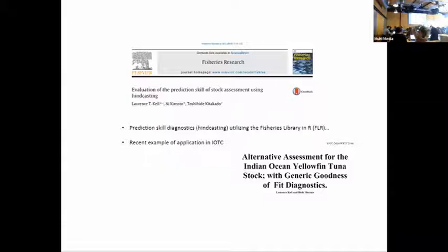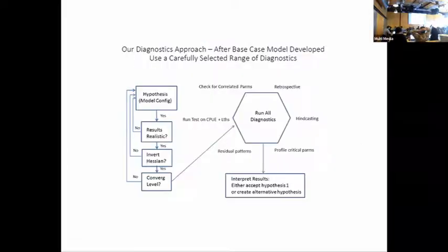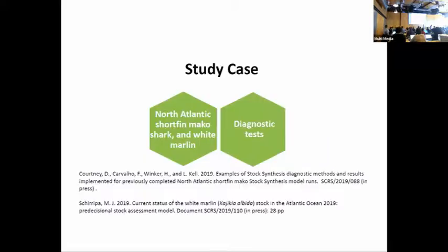This is the flow of how we've been looking at diagnostics. The left-hand side is the initial step - you want to make sure that your model is fitting the data in the normal way, look at the residuals to make sure you don't have any issues, and test for model convergence. But then the new thing that we've been doing is on the right hand side where we'll run a suite of diagnostics to check for correlated parameters, retrospective analysis, hindcasting, profile likelihoods, and then Felipe Carvalho has generated some plot diagnostics that make it easier to look at randomness of the residuals.